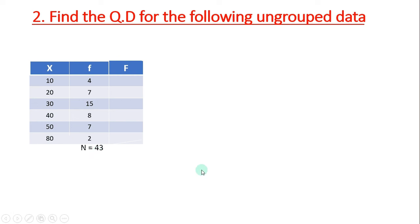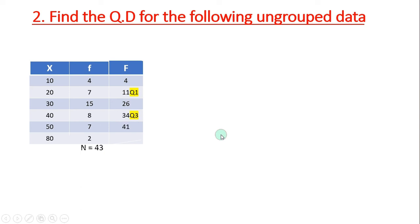The first step is to calculate the cumulative frequency. It starts from 4. So the cumulative frequency values are: 4, then add 7 to get 11, then 26, then 34, then 41, then 43.